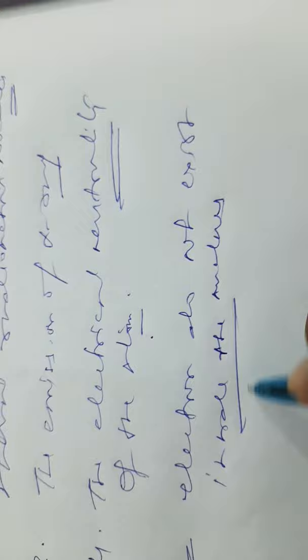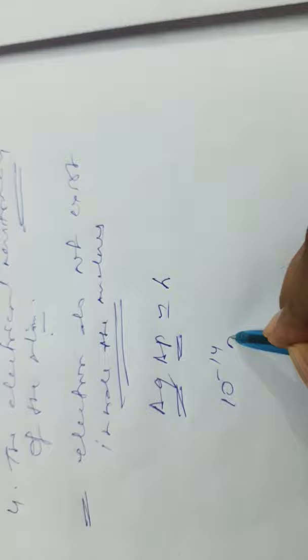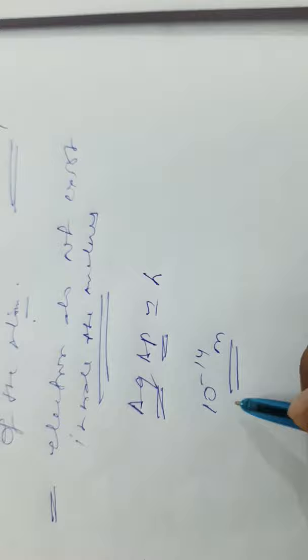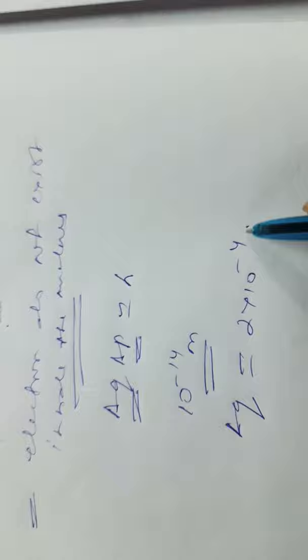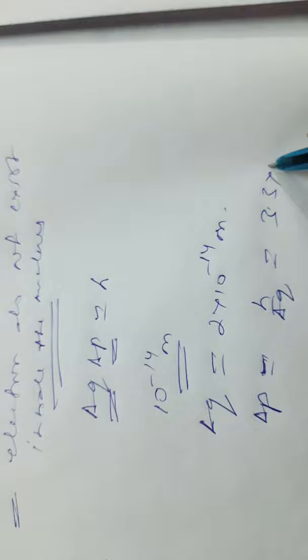What we know from the uncertainty principle is that Δq·Δp ≈ h, where Δq is the uncertainty in determining the position and Δp is the uncertainty in the momentum of the particle. The radius of the nucleus is assumed to be of the order of 10⁻¹⁴ meter. So the maximum uncertainty in the position is Δq ≈ 2×10⁻¹⁴ meter, giving Δp = h/Δq ≈ 3.3×10⁻²⁰ joule·second per meter.